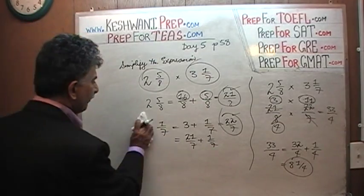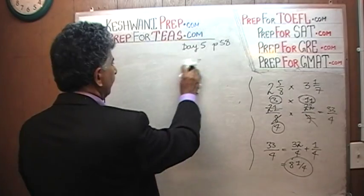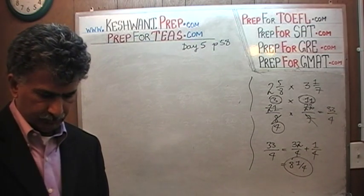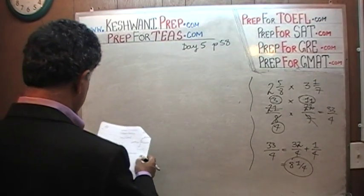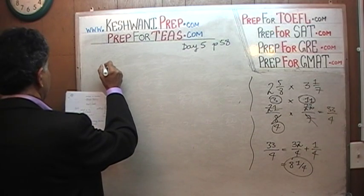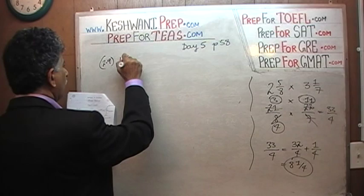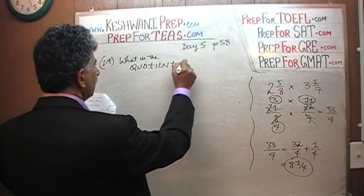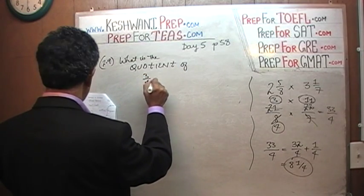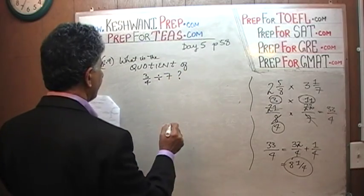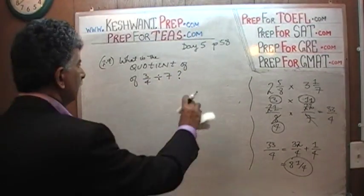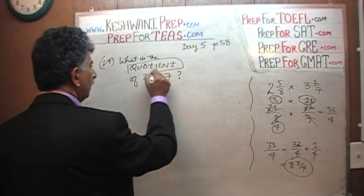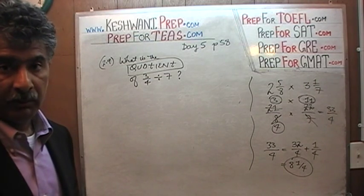The next one is also solved in the book. The next problem is example 2.9 — it is a tricky one. It asks: what is the quotient of 3/4 divided by 7? It is just a matter of understanding the language. What does that mean? We are going to talk about it right now for the next few minutes.